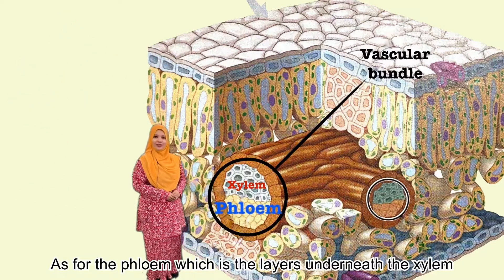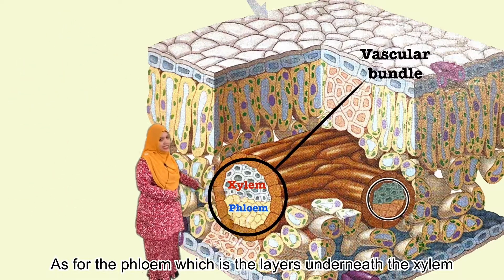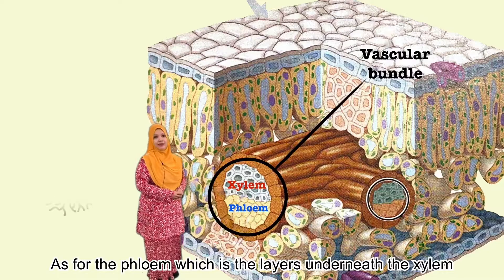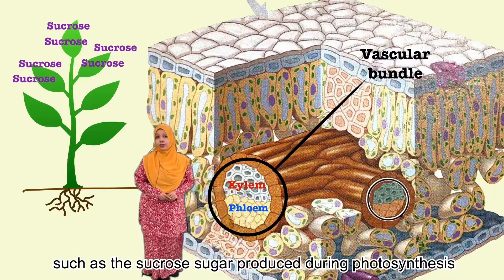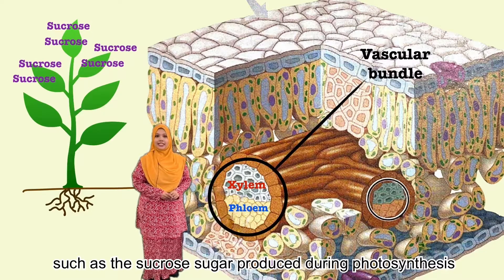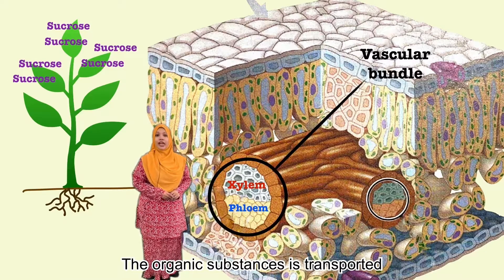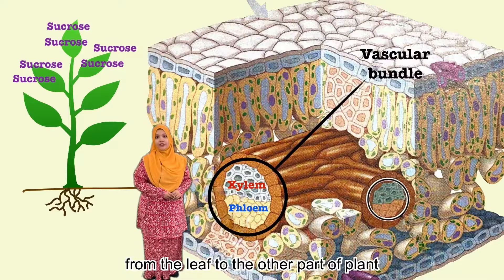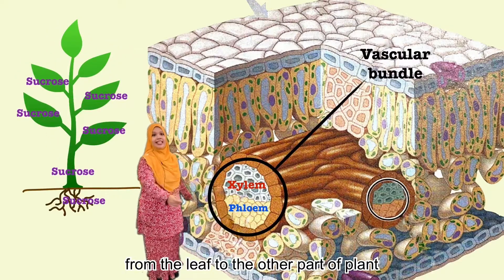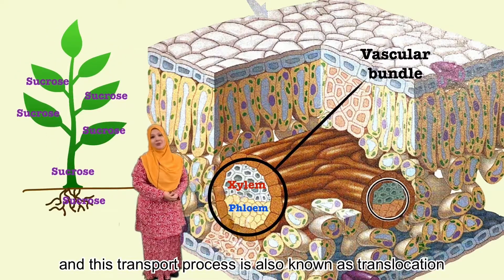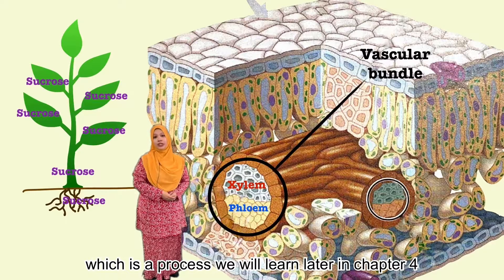As for the phloem, which is the layer underneath the xylem, it functions to transport organic substances such as sucrose sugar produced during photosynthesis. The organic substances are transported from the leaf to other parts of the plant, and this transport process is also known as translocation, which is a process we will learn later in Chapter 4.